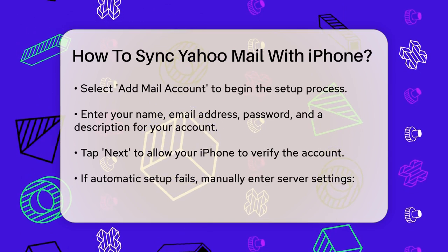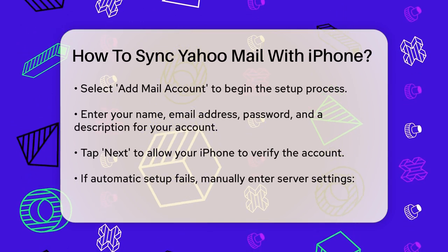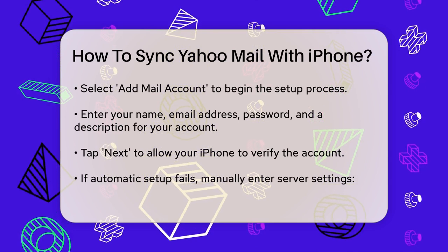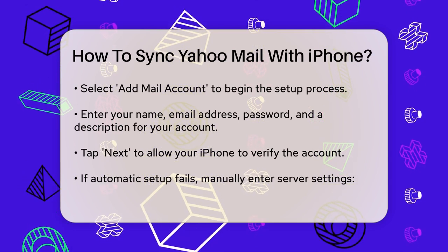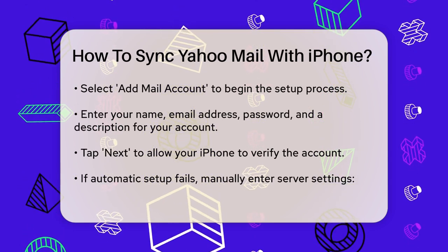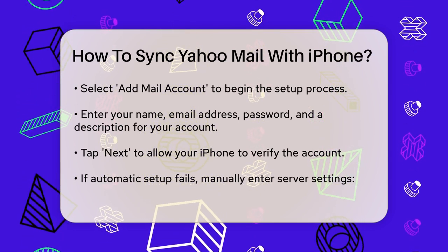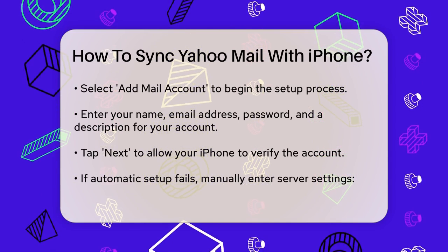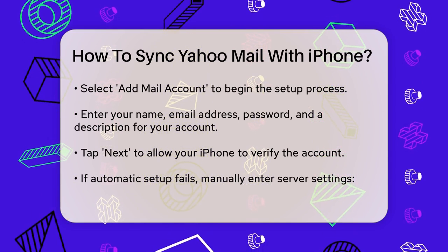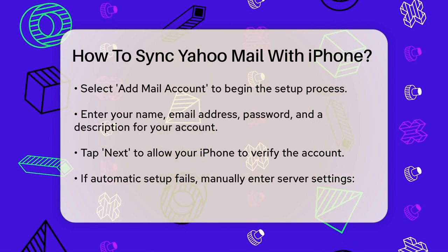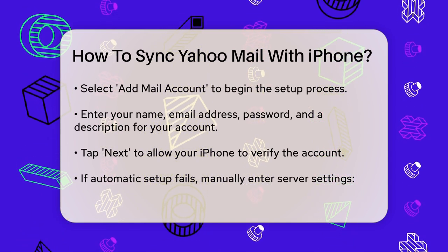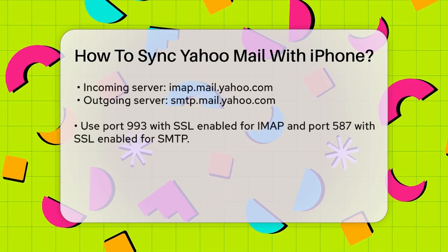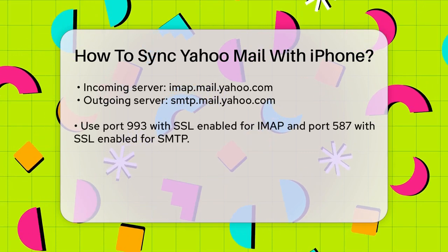Your iPhone will then attempt to verify the account. If it doesn't automatically set up the account, you might need to enter the server settings manually. For Yahoo Mail, the incoming mail server is imap.mail.yahoo.com, and the outgoing mail server is smtp.mail.yahoo.com.